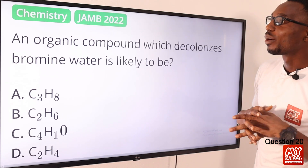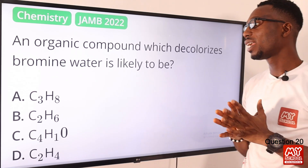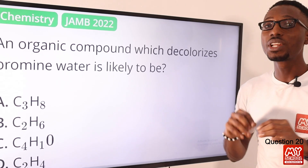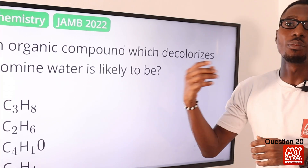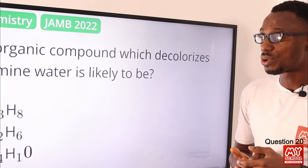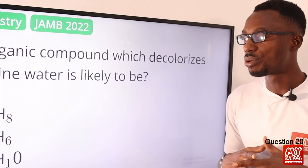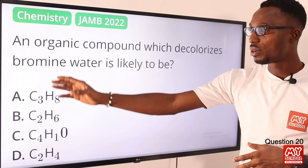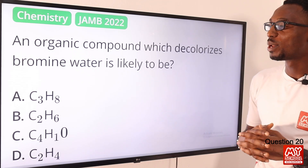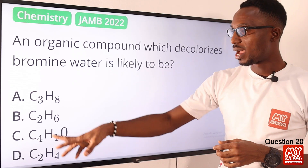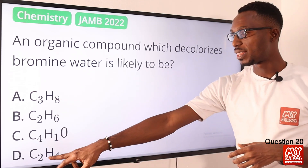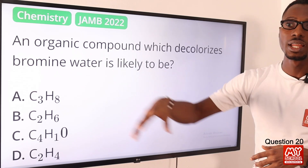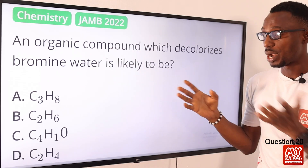Question twenty: an organic compound which decolorizes bromine water is likely to be what? This involves electrophilic addition between an alkene and bromine water. Alkenes have the general formula CnH2n — a typical example is ethene. The other options — butane, methane, propane — belong to the alkane family. The reaction between ethene and bromine water decolorizes it, which is a test for a double bond. The correct option is option D.